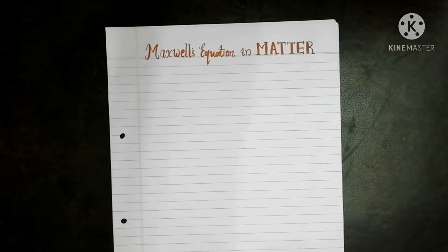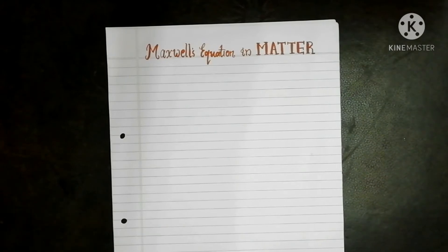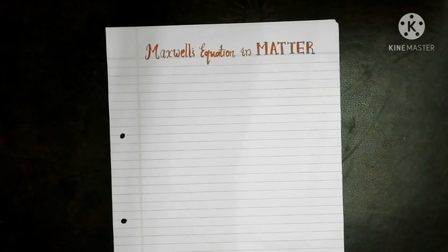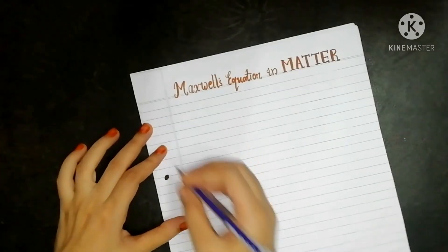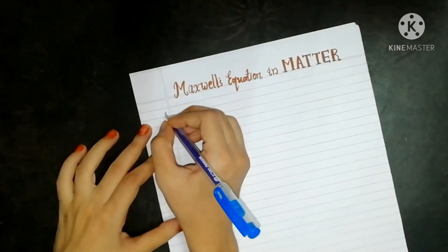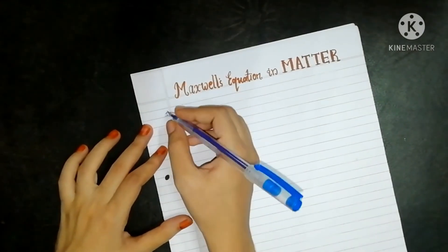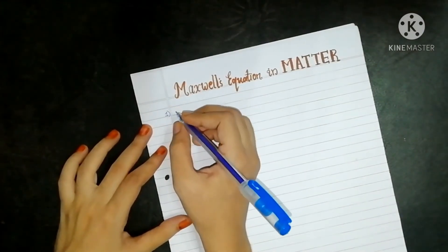Hello everyone, welcome to the channel Simple Science. In this video we will see how Maxwell's equations are modified in matter. Whenever in electrodynamics you are stuck with a Maxwell's equation problem, the first and foremost recommended way is to write down all four Maxwell's equations and then move ahead to find the solution. We will write the Maxwell's equations first and then see how they are modified in material media.